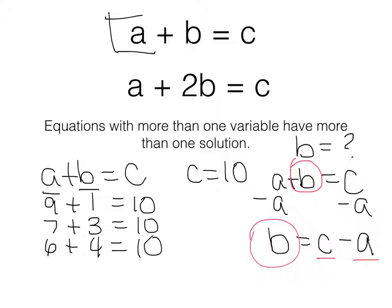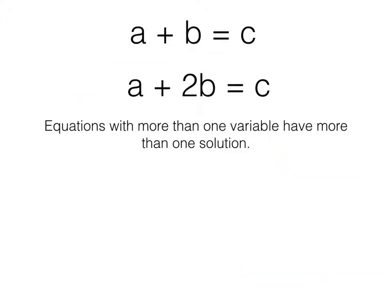Pause the movie, copy this example with these steps into your notes, and then try to solve this one on your own. Make sure you are solving for b. When you've finished solving a plus 2b equals c for the letter b, press play and let's see how you did.